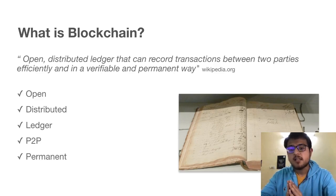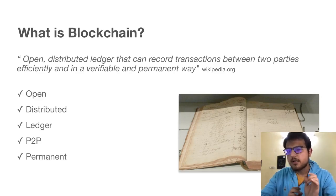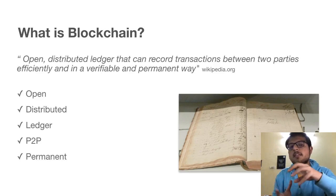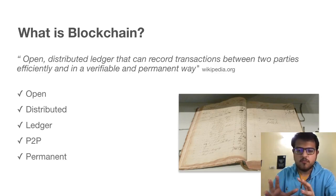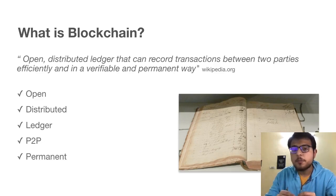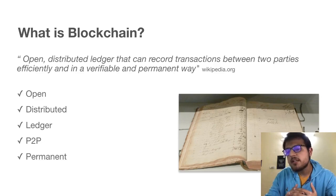Open means that it is publicly available — anybody can read it. Distributed means that it is with every entity on the network, where every entity can mean every system or machine. For example, everyone on the Bitcoin network has a ledger. Distributed means that it's with everyone — a single copy of all transactions. A ledger is a history of transactions, and P2P means peer-to-peer. Peer-to-peer means one system talking to another system to do a transaction — there are no central entities involved.